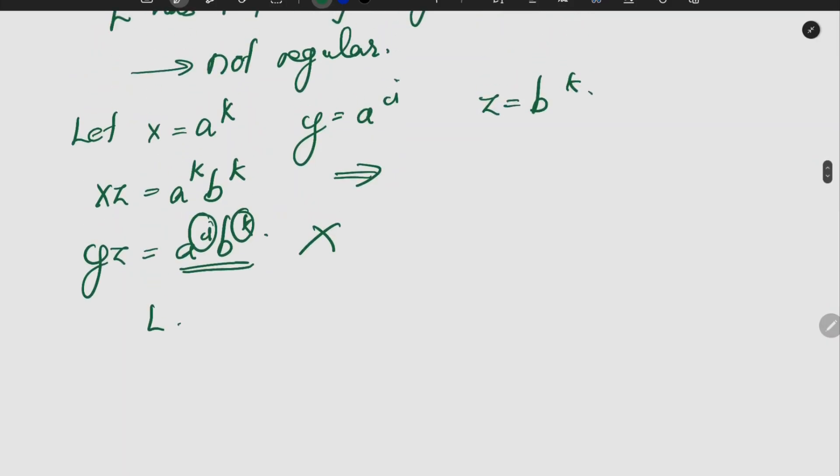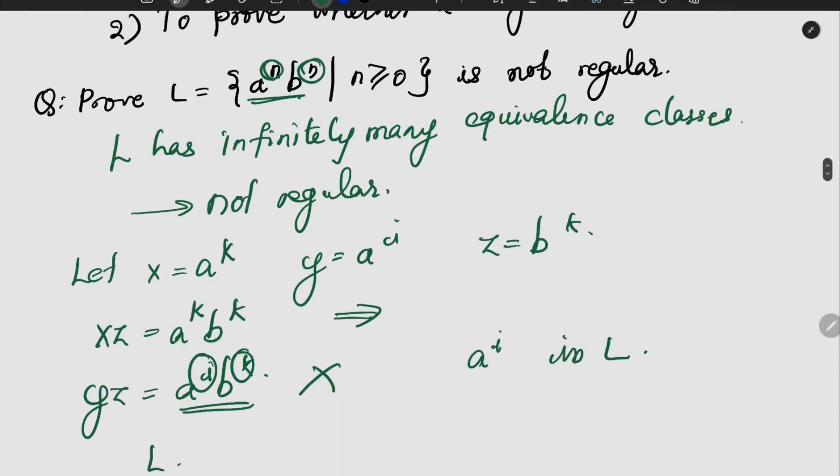If there is at least a string, a raised to i, which is a part of the language, that means it will lead to infinitely many equivalence classes.